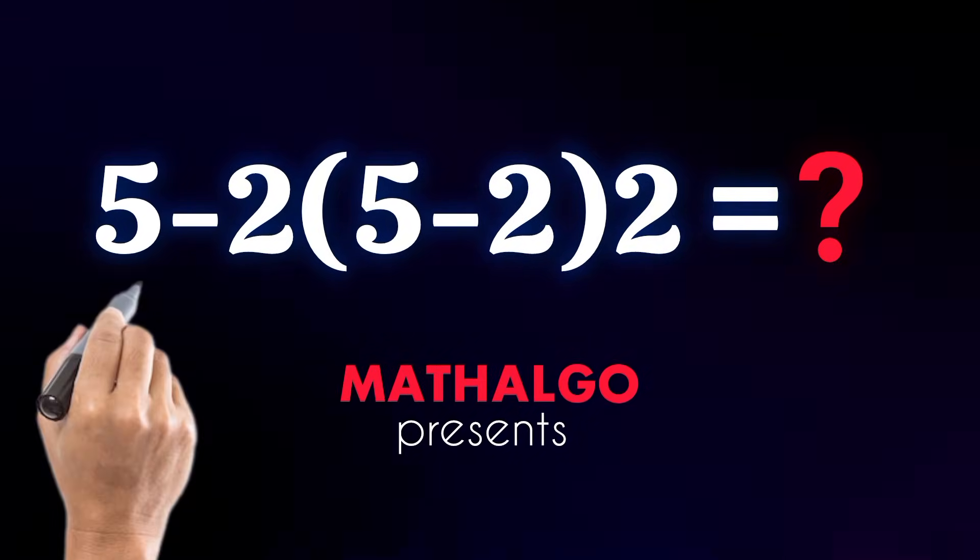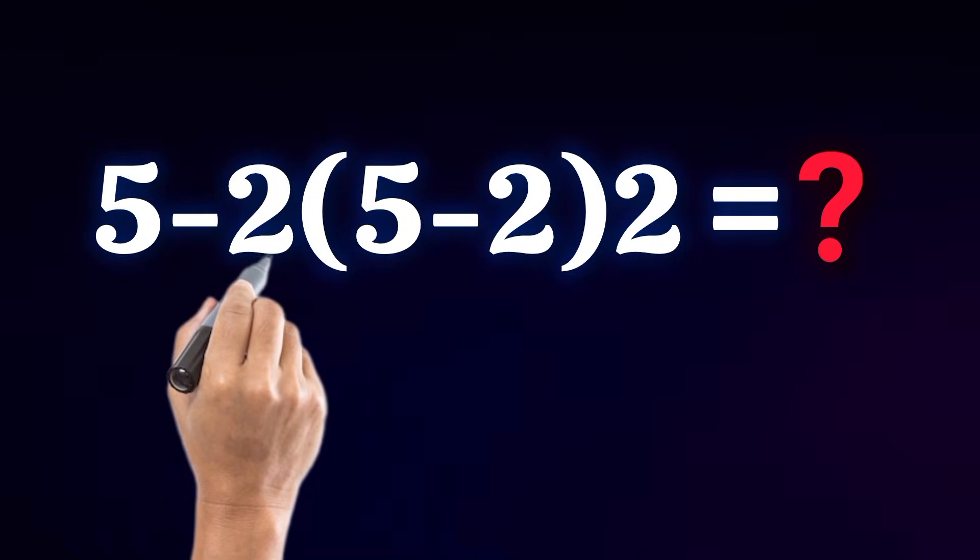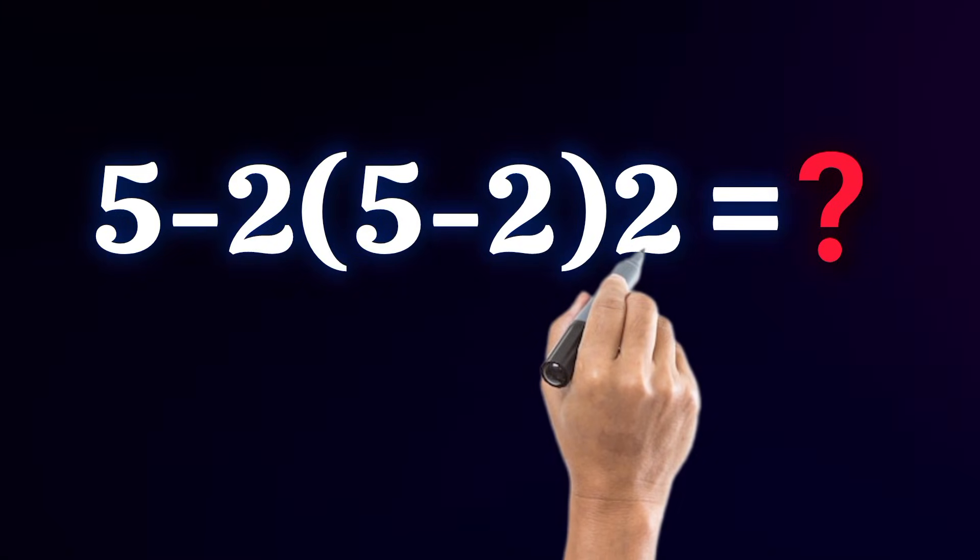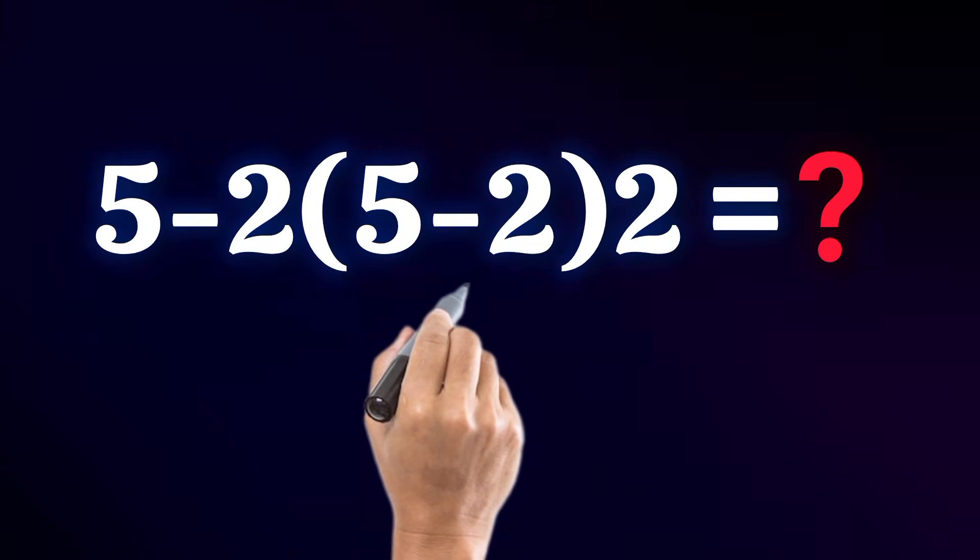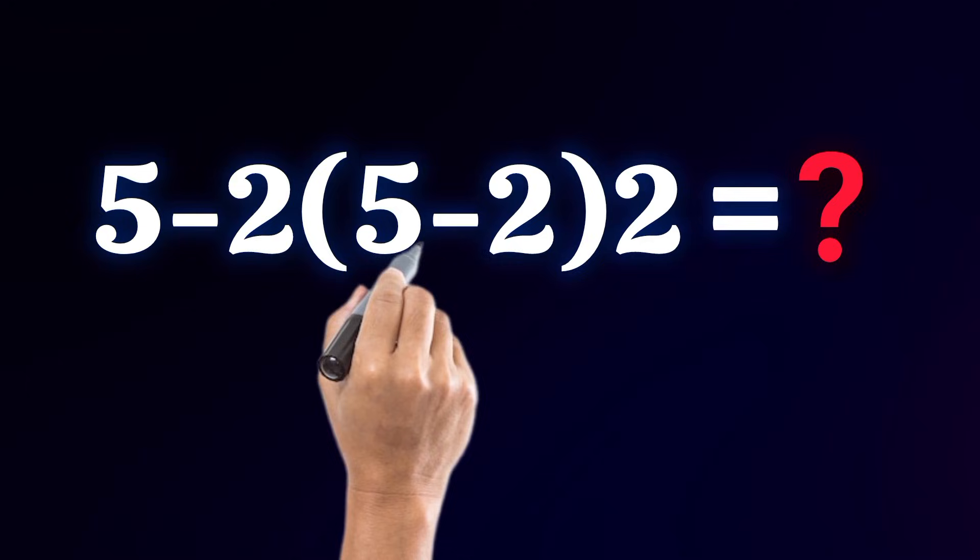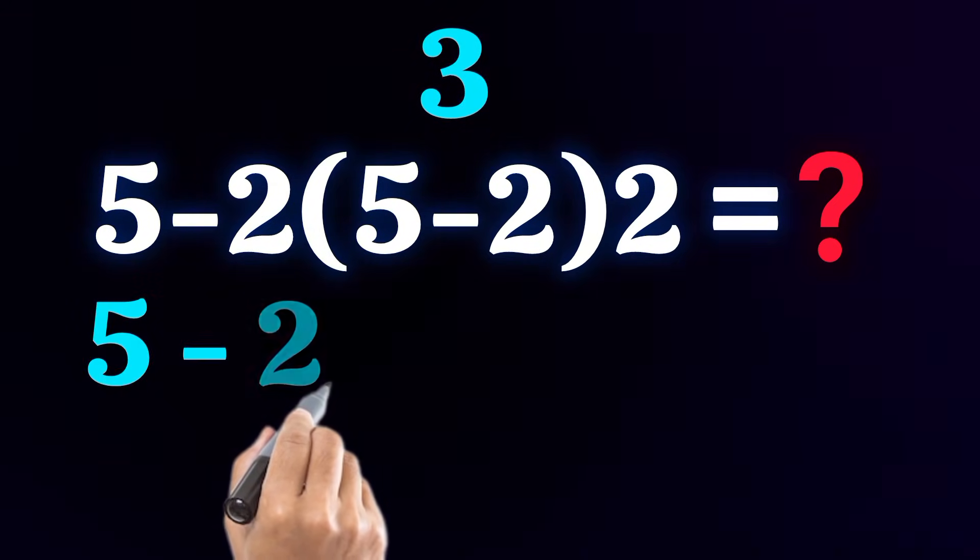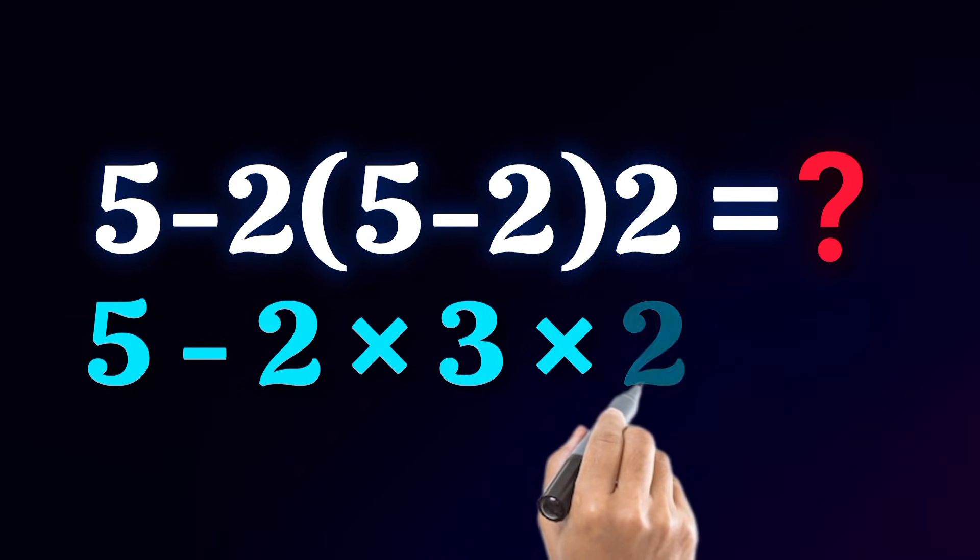The expression is 5 minus 2 open parentheses 5 minus 2 close parentheses 2. First people solve the parentheses 5 minus 2 equals 3. Expression becomes 5 minus 2 times 3 times 2.